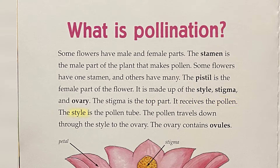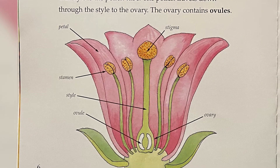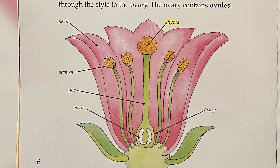The style is the pollen tube. The pollen travels down through the style to the ovary. The ovary contains ovules. Petal, Stigma, Stamen, Style, Ovule, Ovary.